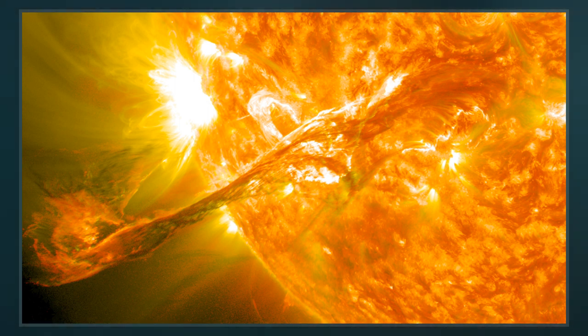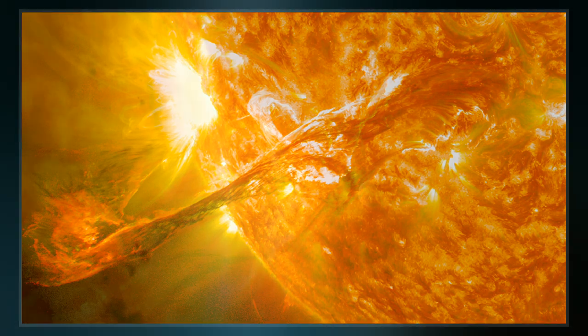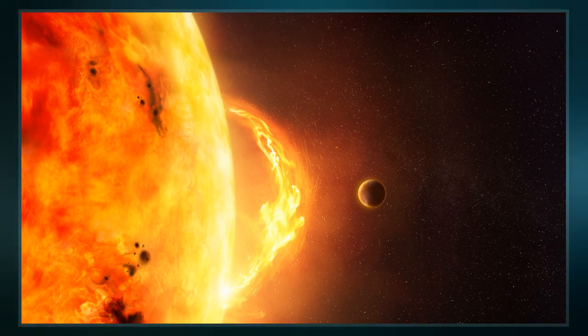The solar storm of 2012 was of similar magnitude, but it passed Earth's orbit without striking the planet, missing by nine days.